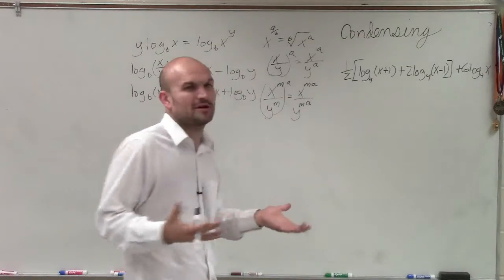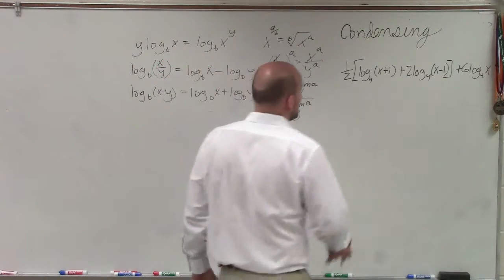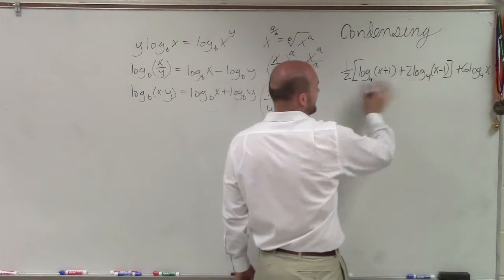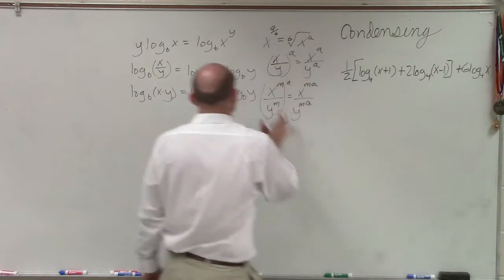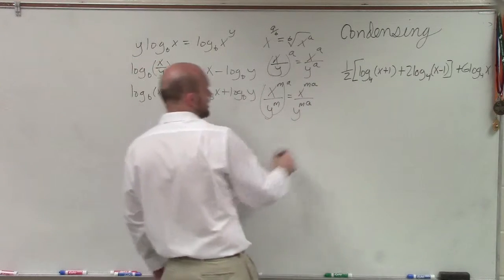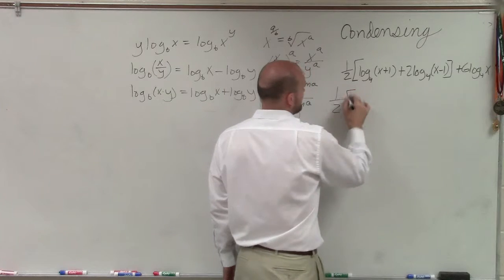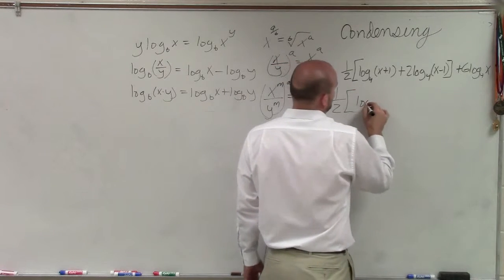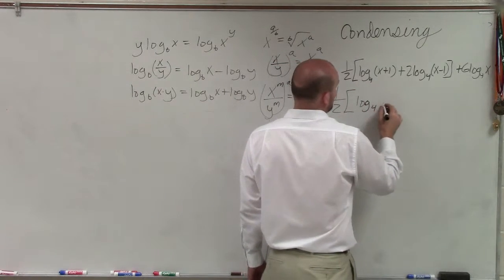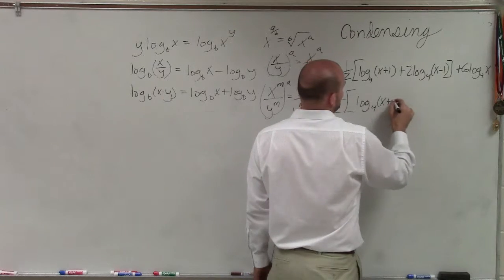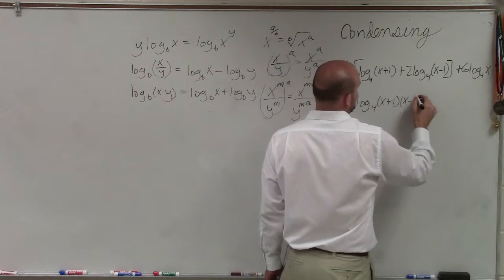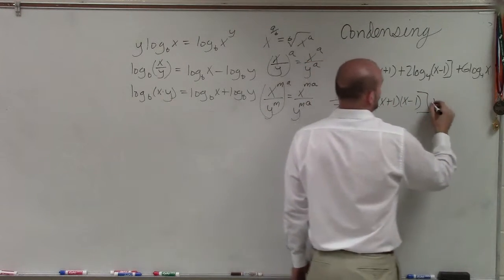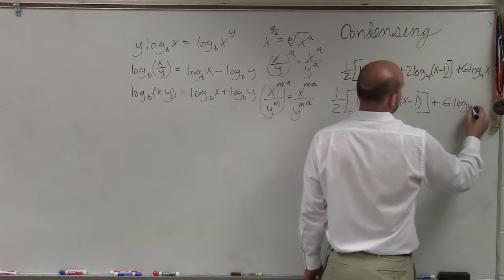So remember, when we plan order of operations, always do inside our parentheses first. So I need to simplify this. You can see I have the sum of two logarithms, which I can rewrite as the product of one single logarithm. So I have 1½ log base 4 of x plus 1 times x minus 1 plus 6 log base 4 of x.